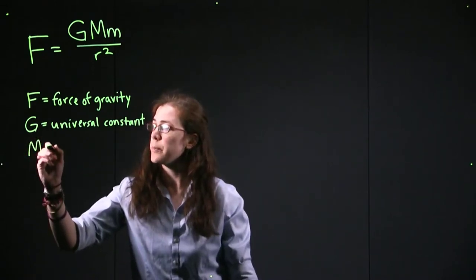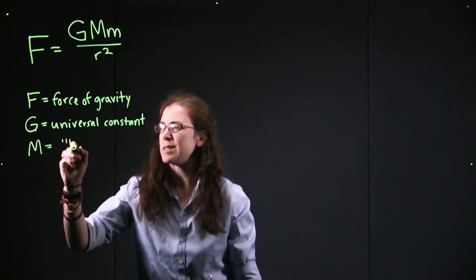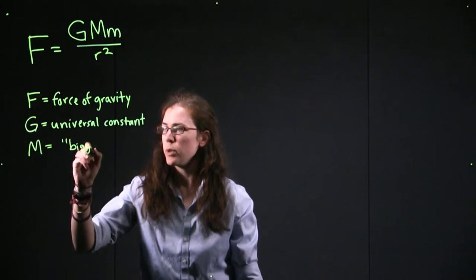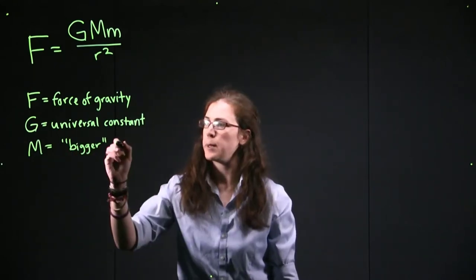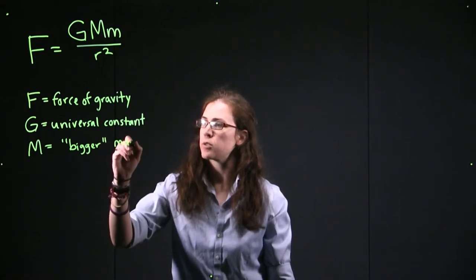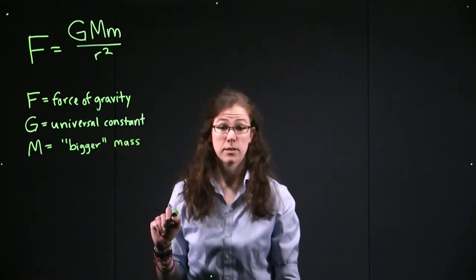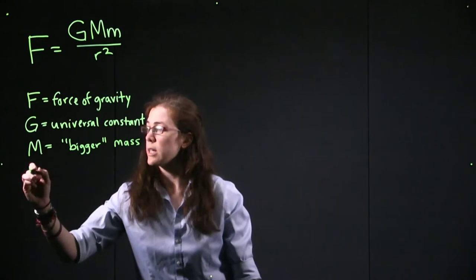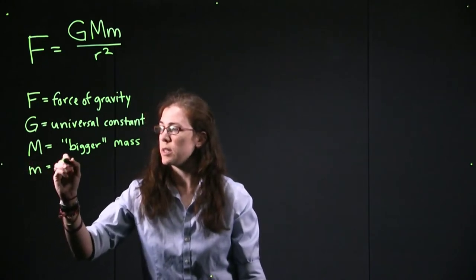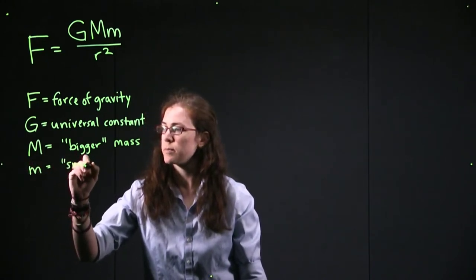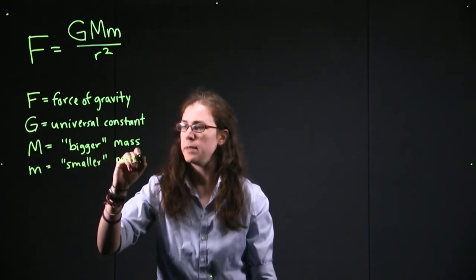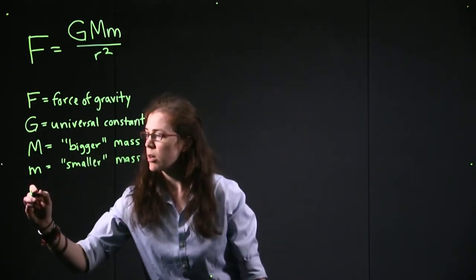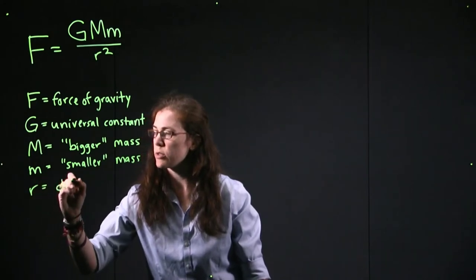The large M here refers to what we'll say is the bigger mass. So if we think about the Earth and the Moon like we will in just a second, the big mass would be referring to the Earth's mass. Now our little m is the smaller mass, the Moon's mass in the example that we'll see. And then r is the distance between those two masses.